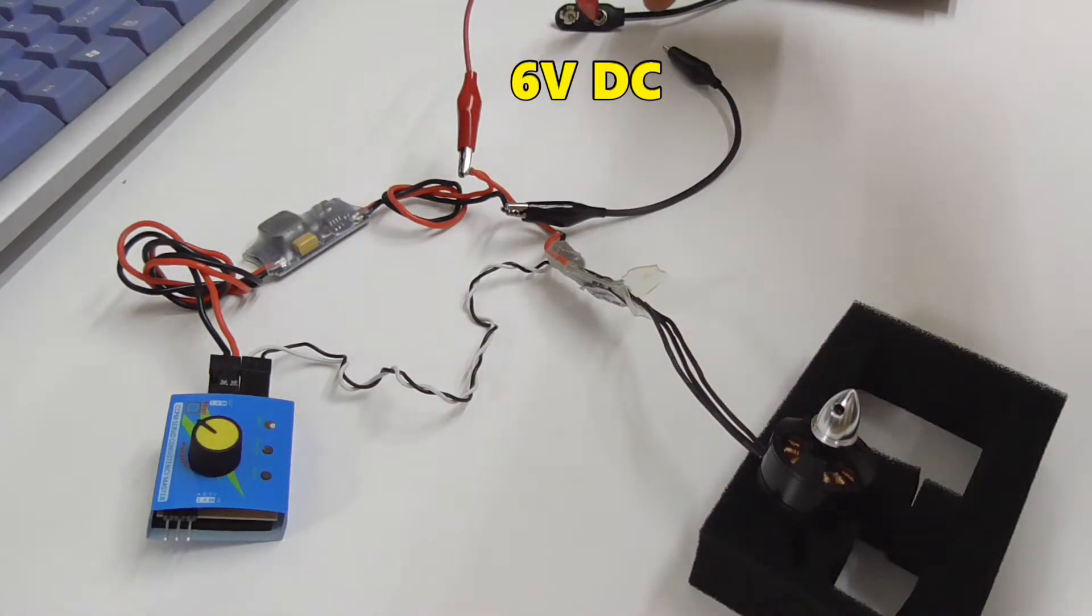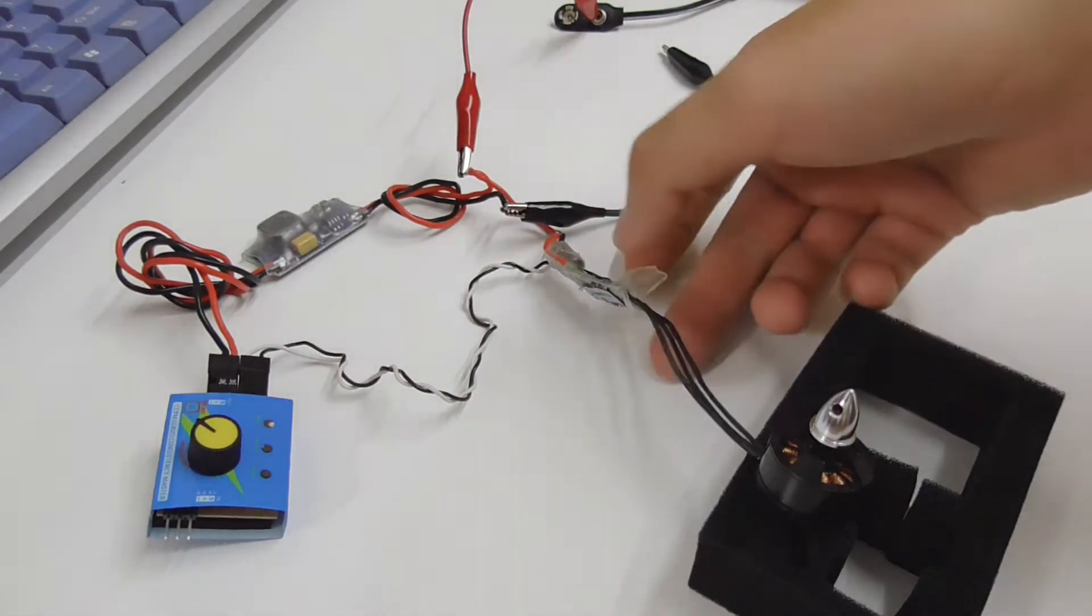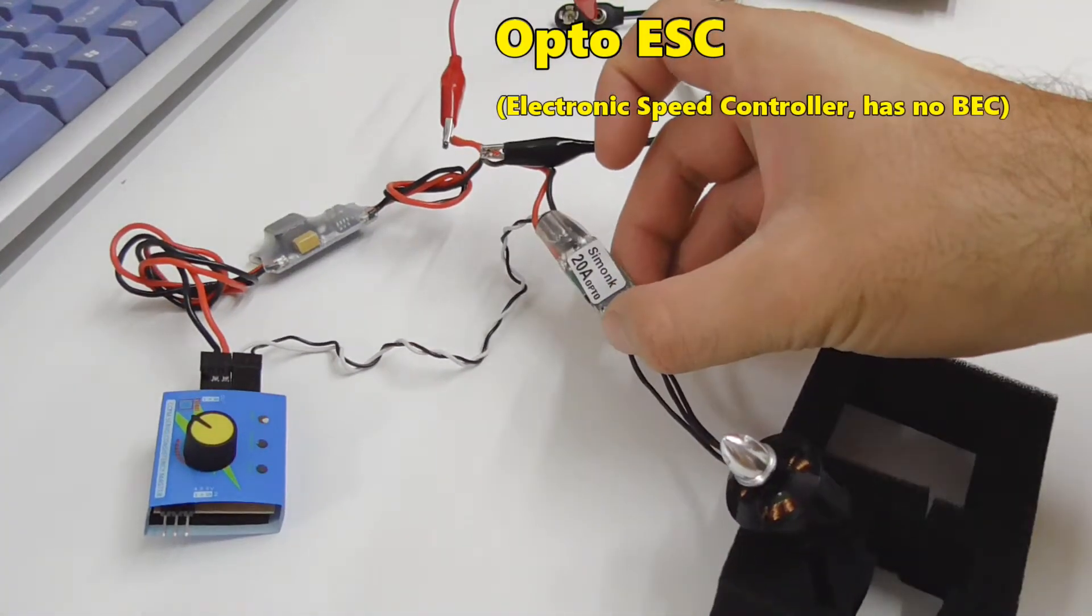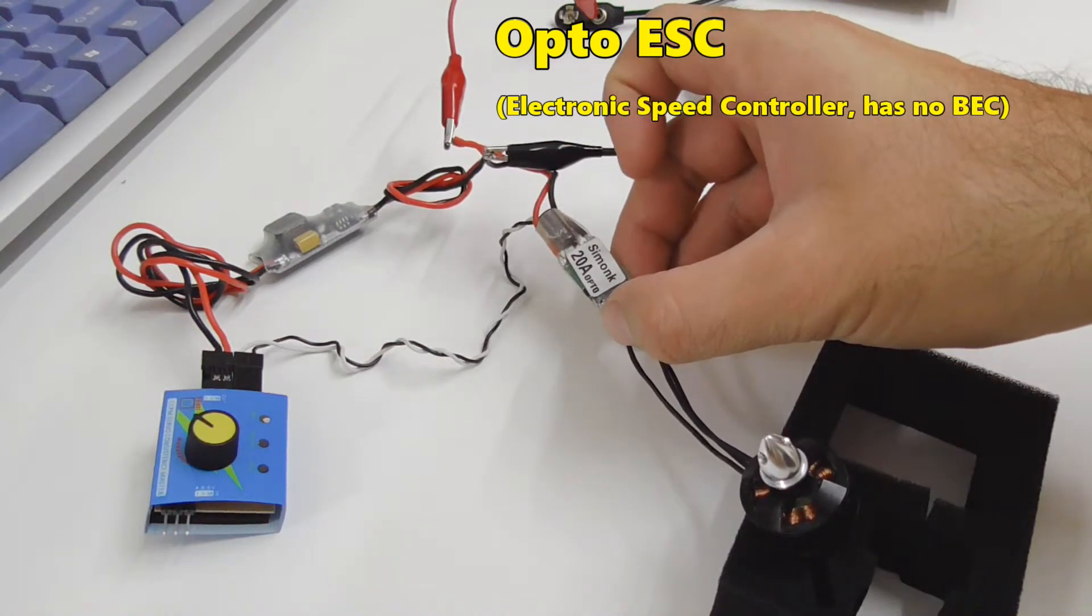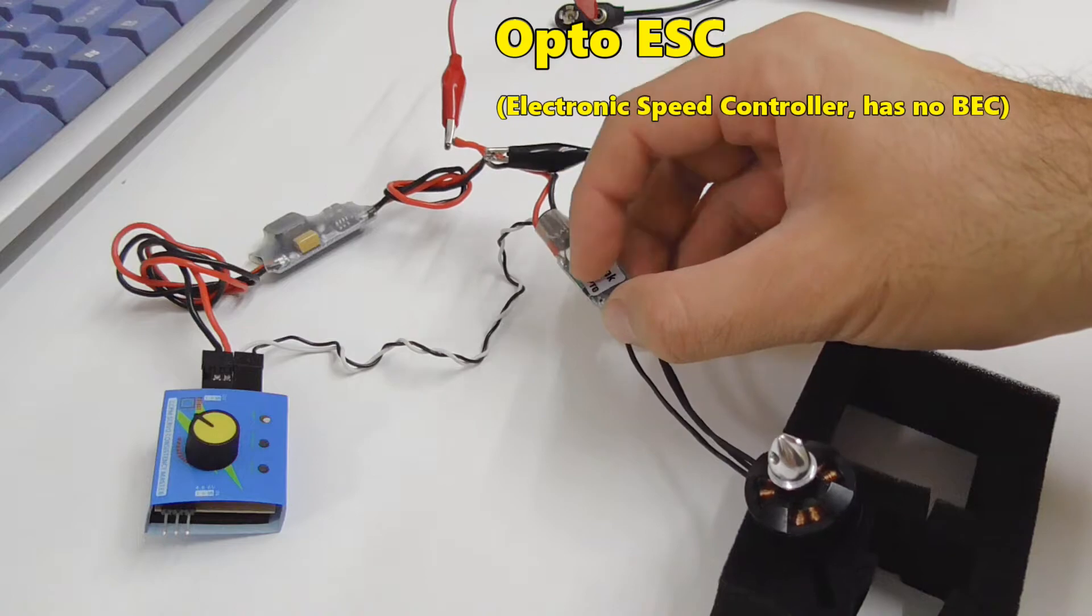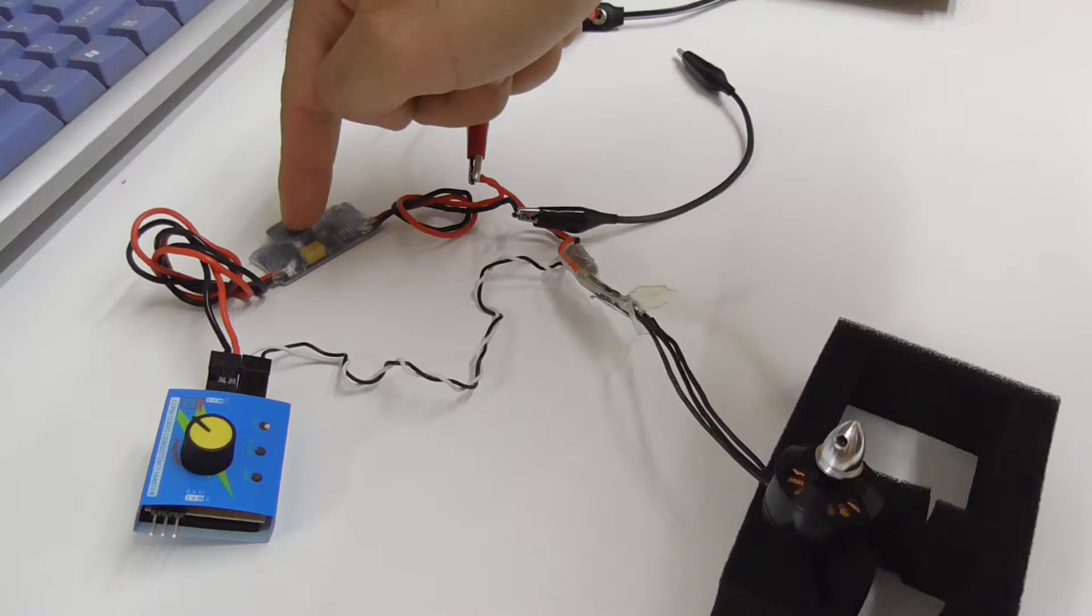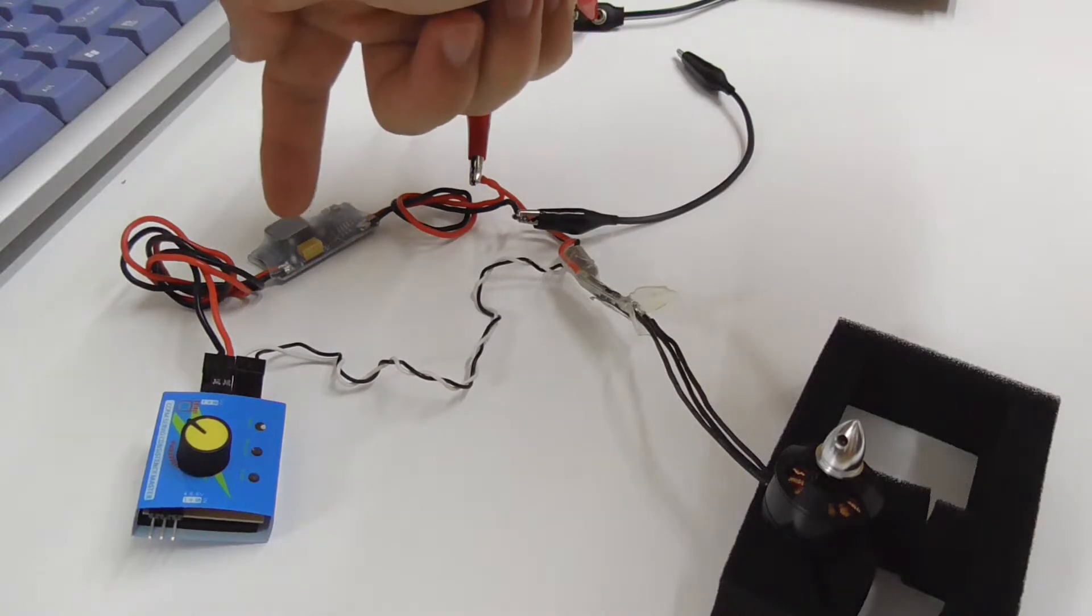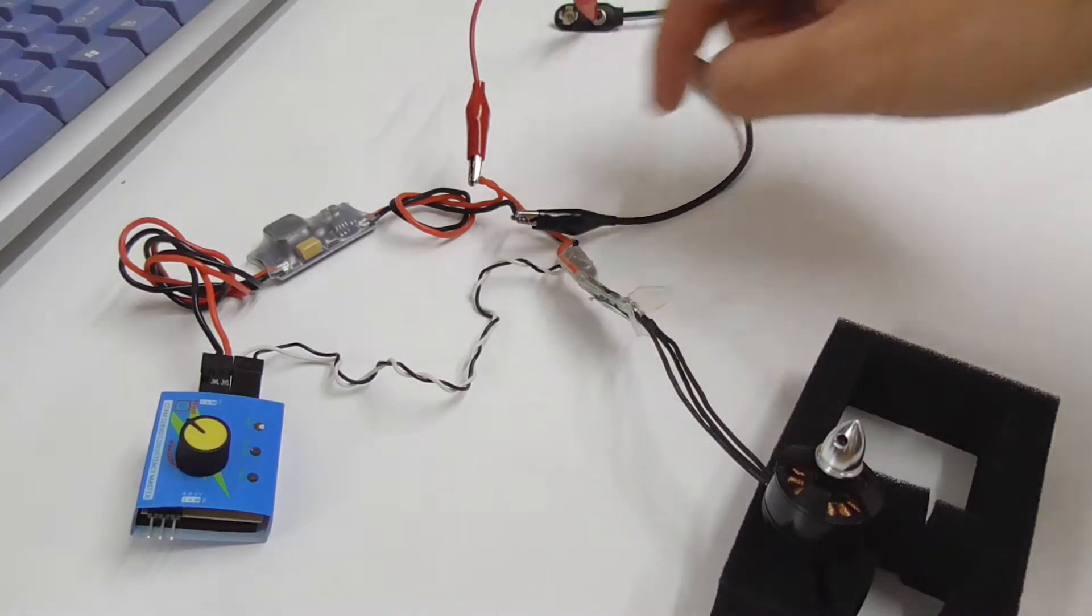Here we have a 20 amp opto ESC, that's an electronic speed controller. It's an opto ESC, it does not have a battery eliminator circuit in it, so I need to provide my own five volts to this one. I will power it with six volts DC through these cables.